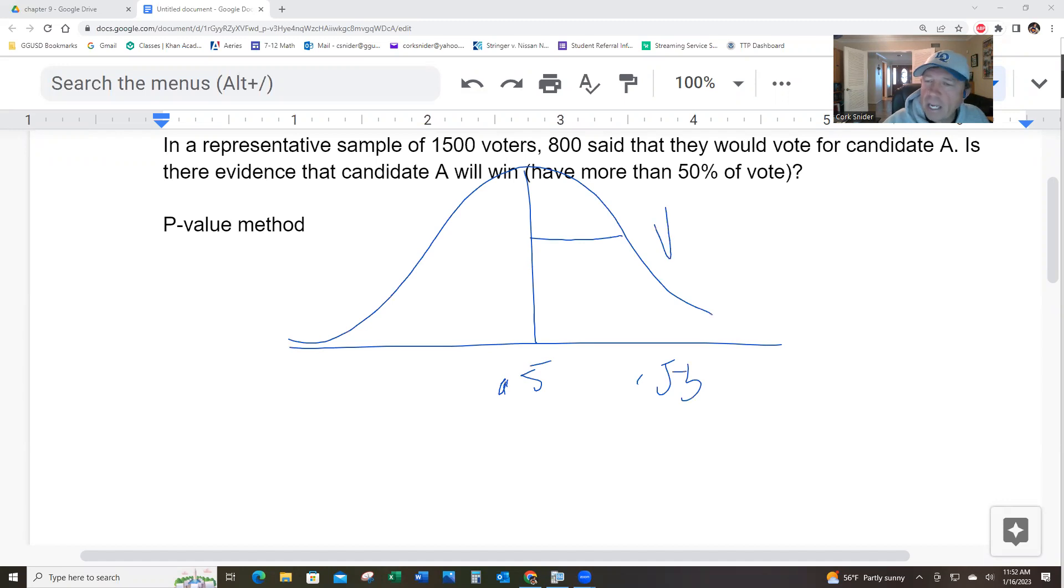The standard deviation is going to be 0.5 times 0.5 divided by 1,500. Why is that? Because a P-value is developed assuming H0 is true. And if you assume H0 is true, H0 is that the candidates are even, 50%. That's why. There's an assumption that 50% is the truth. So, that's why that goes there.